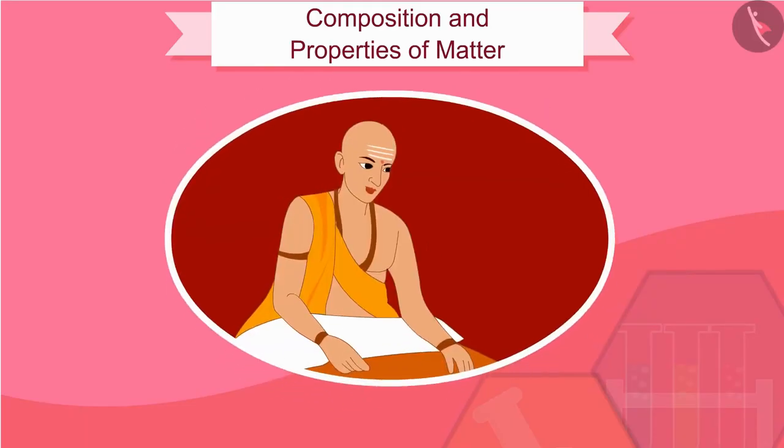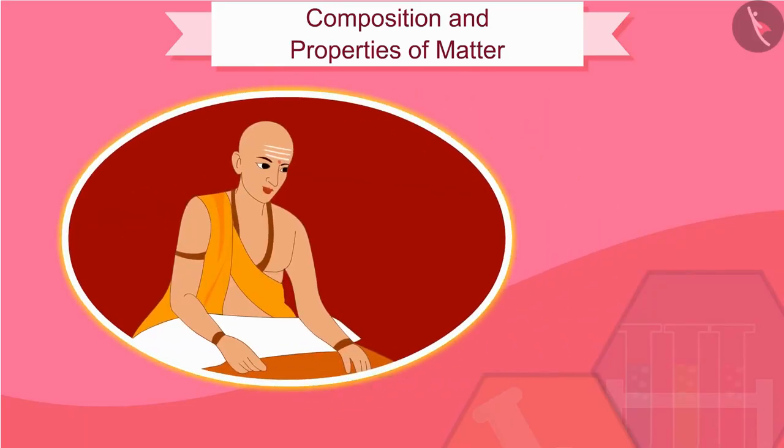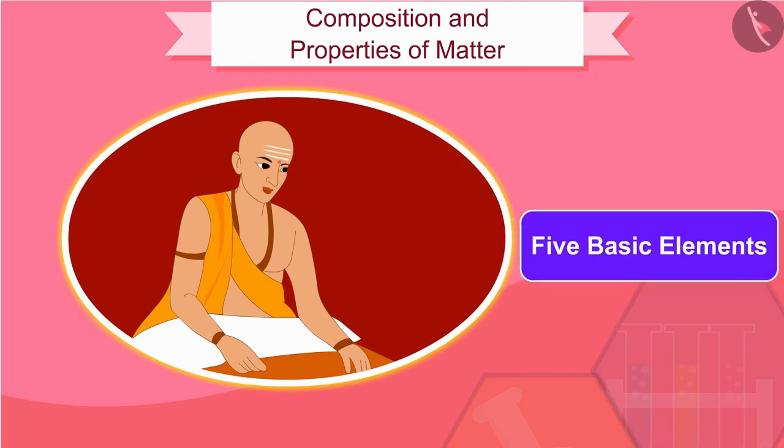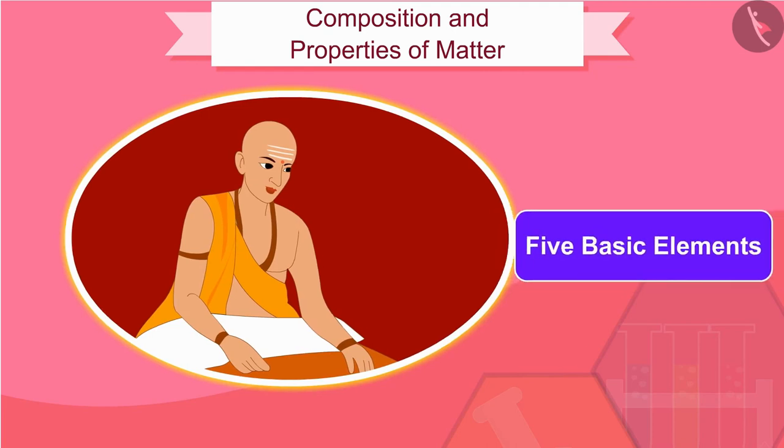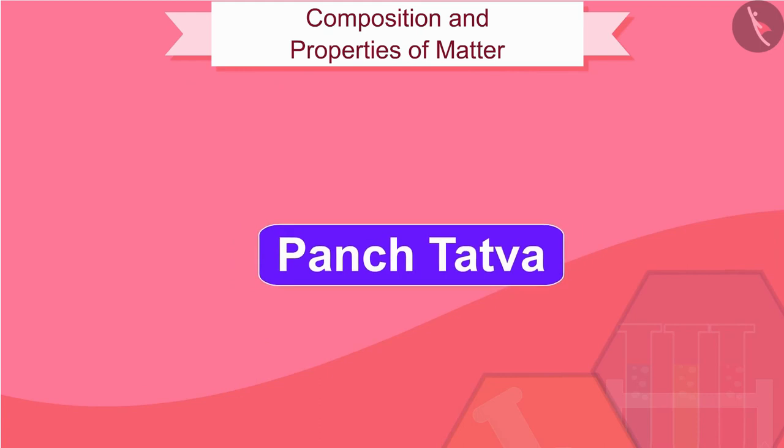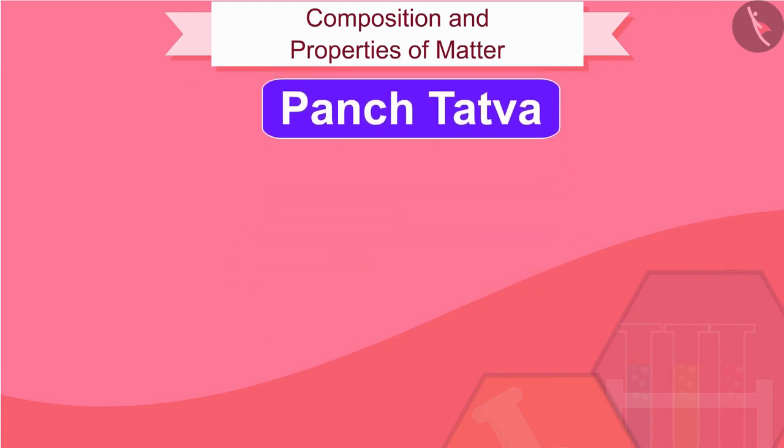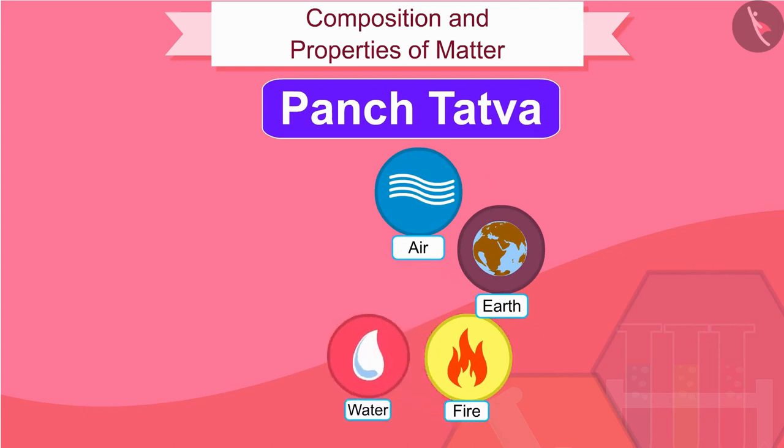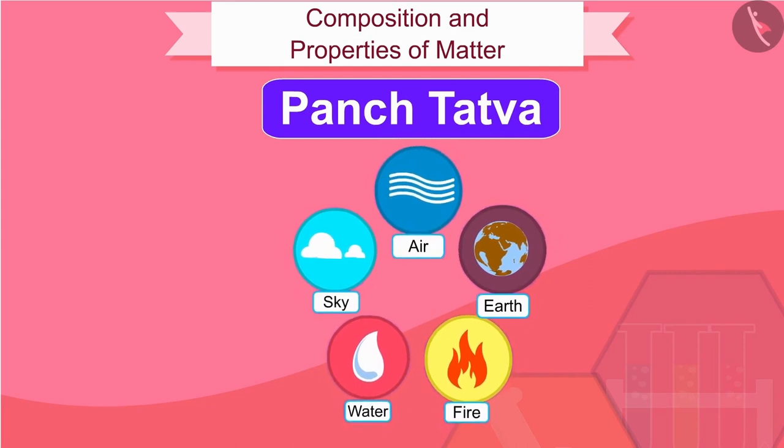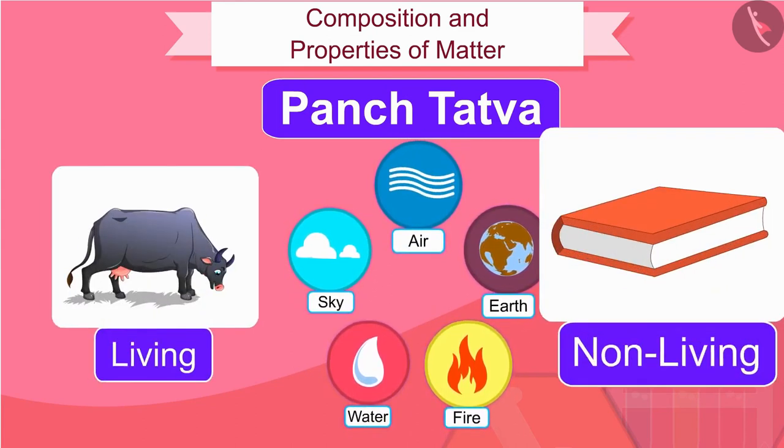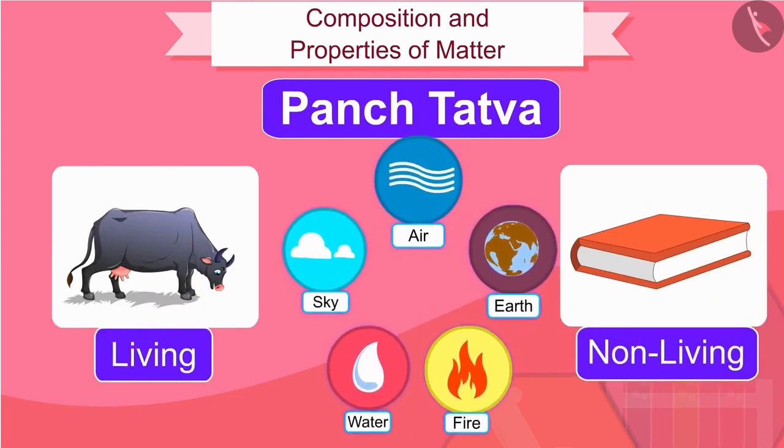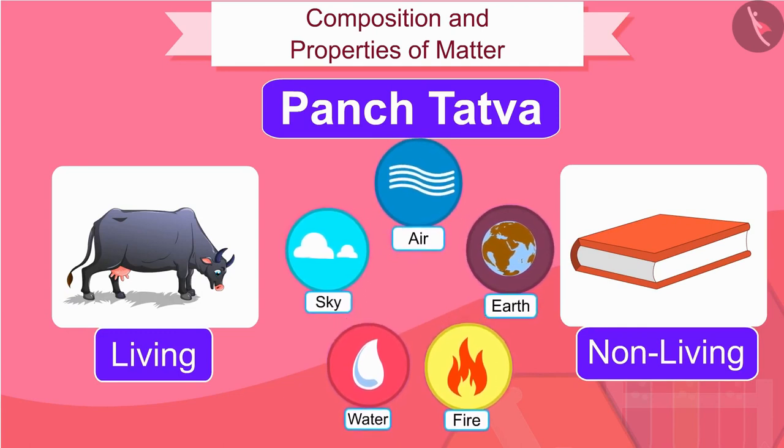Early Indian philosophers classified matter in the form of five basic elements which we know as Panchatattva. These are the five elements: air, earth, fire, water and sky. According to them, everything living or non-living was made up of these five basic elements.